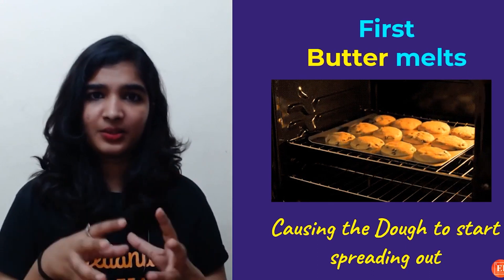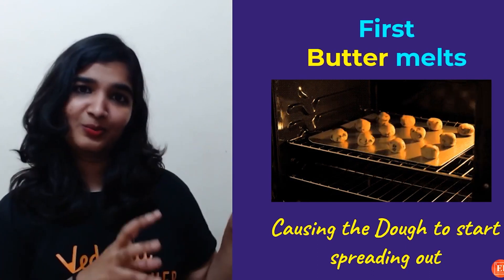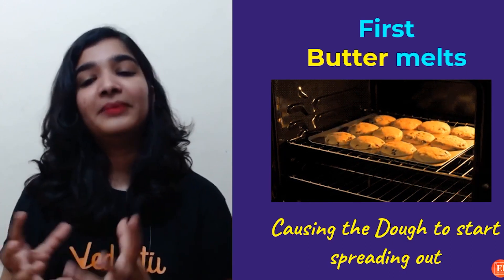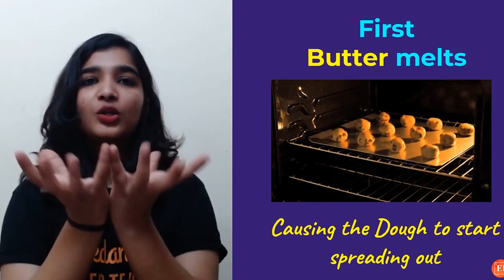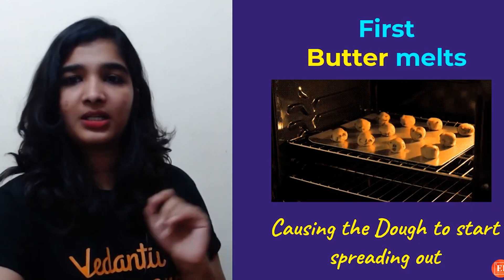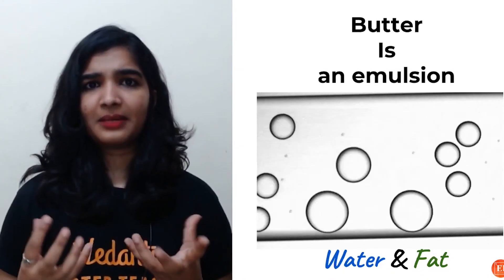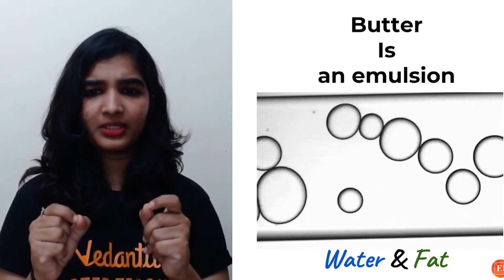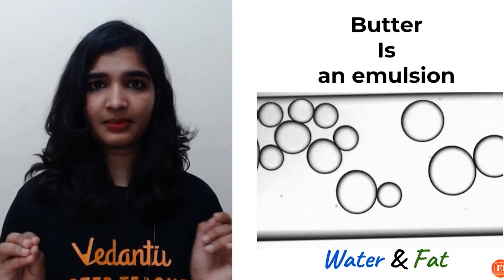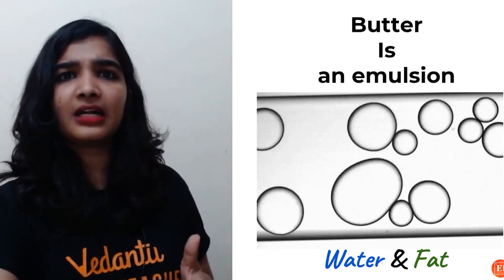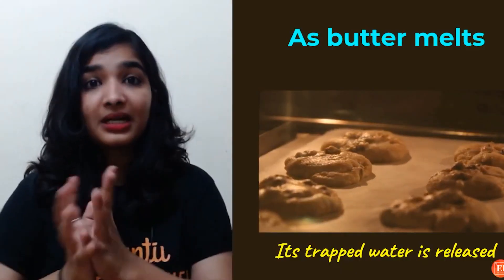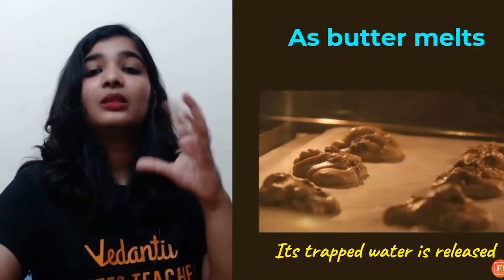The first thing is you will add butter to the dough. So first, the butter melts. The melting of butter will lead to the spreading out of the dough. Butter is basically an emulsion — it will be in the form of droplets, liquid droplets, which are immiscible. It does not get dissolved. Butter is basically fat, so obviously it will behave like an emulsion.